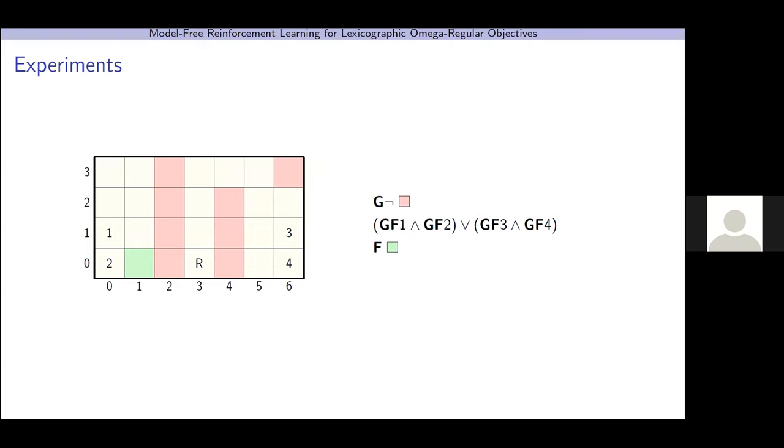So, in this example, we have a robot moving on a grid world. And the robot can pick up, down, left, and right. When it picks a direction, it moves one cell in that direction with probability 1/2, and two cells in that direction with probability 1/2. When it hits a wall, it remains in the cell next to the wall. So, our most important property is to always avoid these red cells. We can definitely do this with probability one. Our second objective is to continue seeing ones and twos, these cells labeled one and two, or to continue seeing these cells labeled three and four.